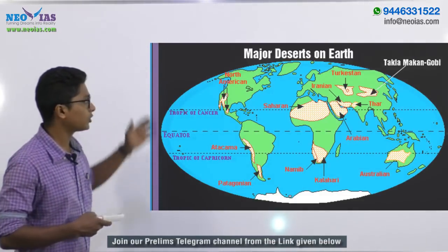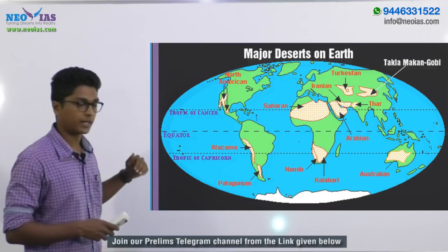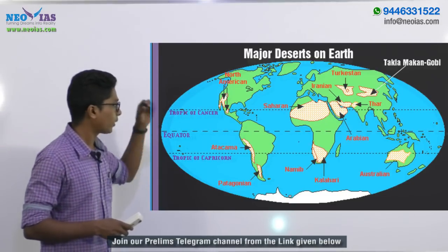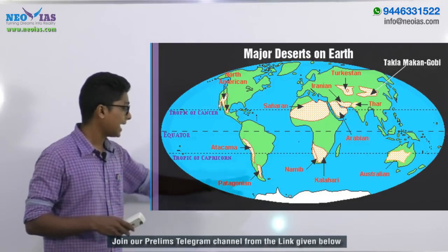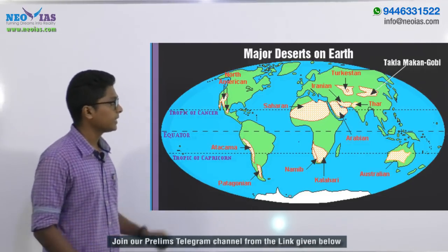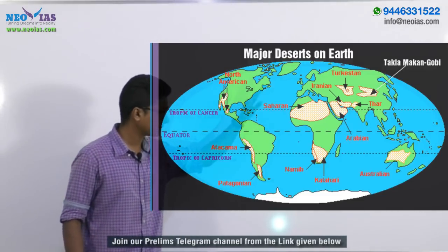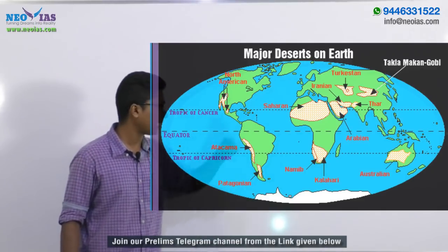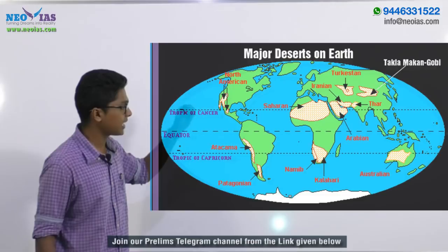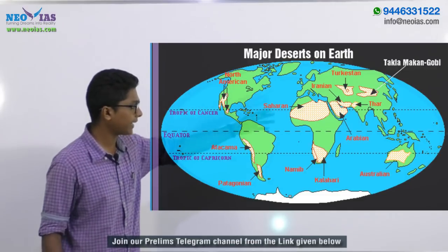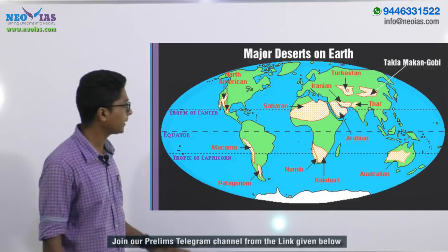Let's take a look at the major hot deserts of the world. Starting from North America, we have the Mojave Desert. In South America, we have the Atacama Desert as well as the Patagonian Desert. Moving towards Africa, we have the Sahara Desert as well as the Namib and Kalahari Deserts. In the West Asian regions, we have the Arabian Desert, the Thar Desert, and the Iranian Desert. Towards Australia, we have the Great Australian Desert.